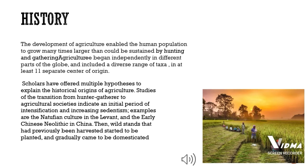The development of agriculture enabled the human population to grow many times larger than could be sustained by hunting and gathering. Agriculture began independently in different parts of the globe and included a diverse range of taxa and at least 11 separate centers of origin.